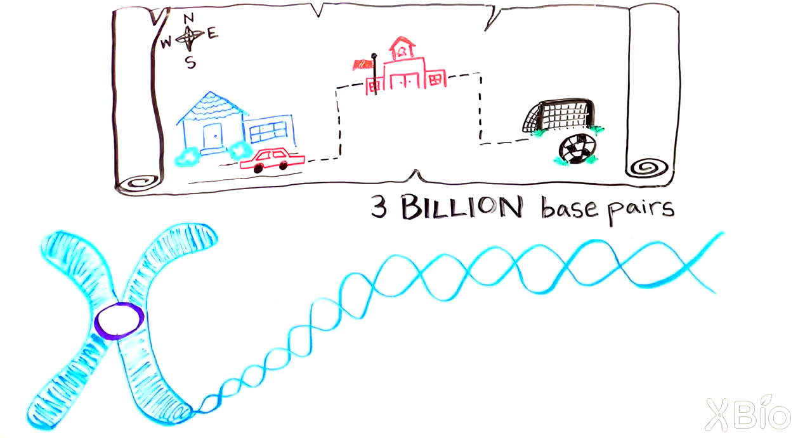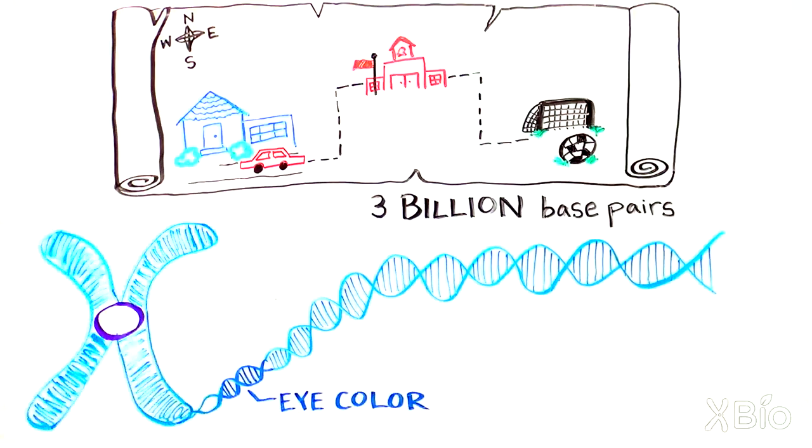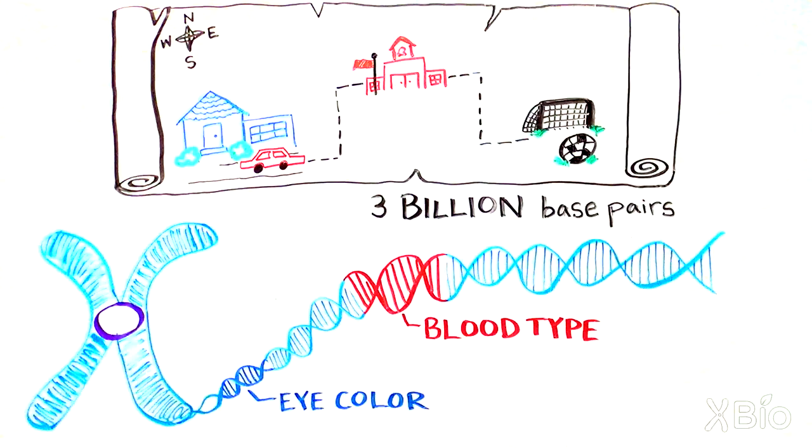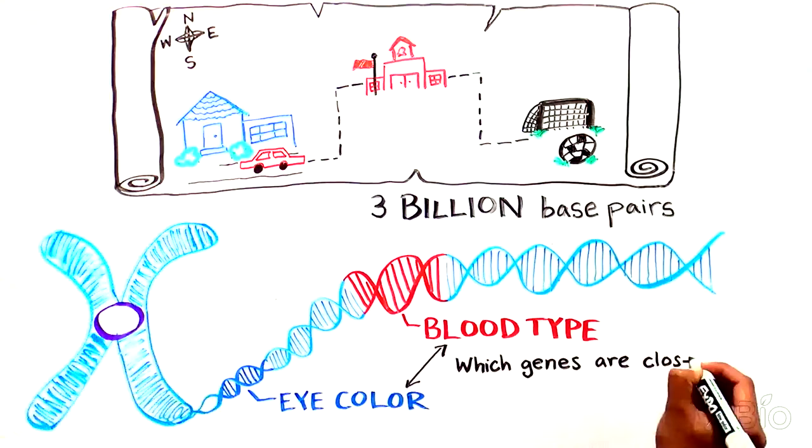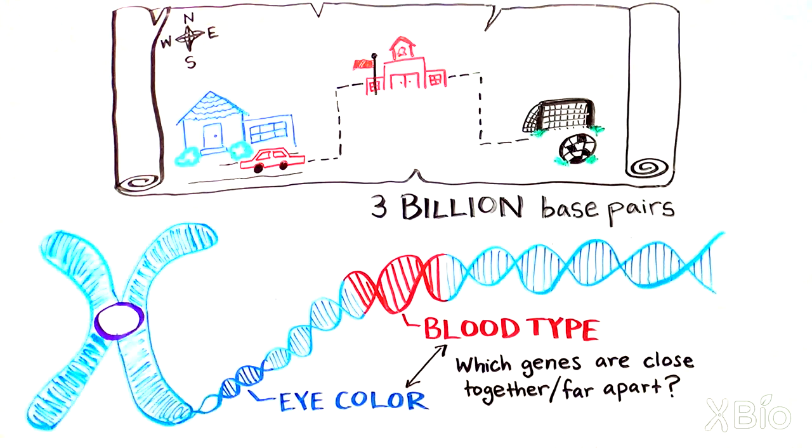Within each chromosome are genes, regions of the DNA that specify traits like eye color or blood type. But how are these traits ordered in the DNA? Which genes are close together and which are far apart? To answer this question, you need a map.